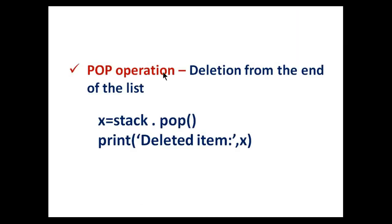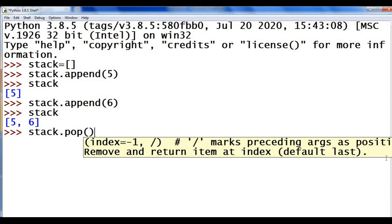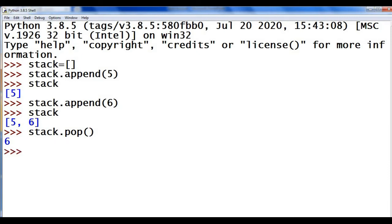Next is pop operation. Pop operation means deletion of an item from the end of the list. To pop an element from the list, the function is pop(). It will remove an item from the end of the list. Here, x = stack.pop() — so the popped element will be stored in x, and if you want you can display the deleted item. Let me show you the pop operation — stack.pop() — the last item is popped.